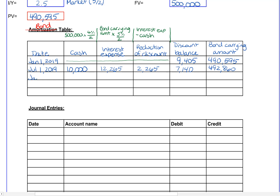We're going to go through this process three more times, so if you feel confident you can pause the video here and try the next few lines on your own. On January 1st, 2020, another six months has gone by. The cash payment is again the face value times the bond interest rate divided by two — $10,000, the same at every cash payment date. Our interest expense is calculated by taking $492,860 times the market interest rate of 5% divided by two.